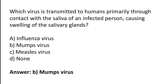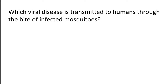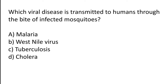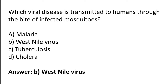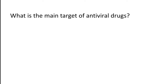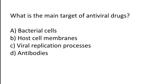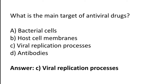Which virus is transmitted to humans through the bite of infected mosquitoes? Options: Malaria, West Nile virus, Tuberculosis, Cholera. The correct answer is option B — West Nile virus is transmitted to humans through the bite of infected mosquitoes. What is the main target of antiviral drugs? Options: Bacterial cells, Host cell membranes, Viral replication processes, Antibodies. The correct answer is option C — viral replication processes is the main target of antiviral drugs.